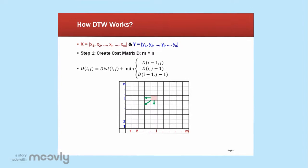After we have seen the overview of dynamic time warping, let's see how it works. Basically, dynamic time warping consists of two steps.